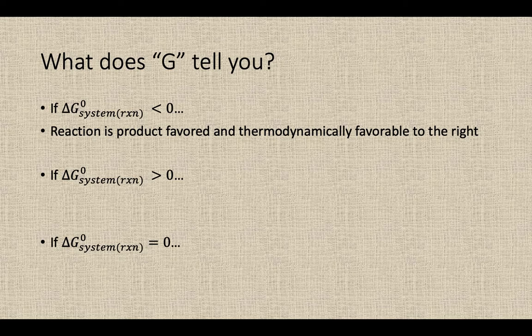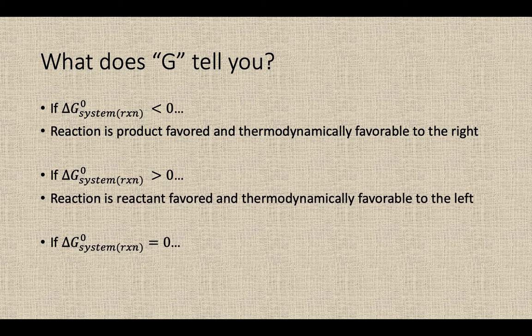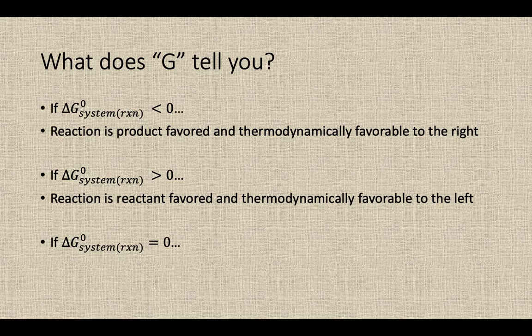If you have a reaction and you go to calculate that delta G and you end up getting a positive value, what that means is that the reaction is reactants favored. It's thermodynamically favorable to the left. It's probably not going to proceed to the product side there without some outside assistance from you. You'd have to force it to go to the right. It wants to go to the left all by itself.